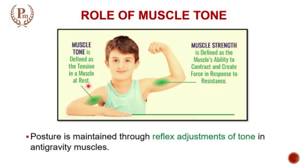How is this tone maintained? Tone is maintained because of the stretch reflex, and in a stretch reflex we have the role of the alpha motor neuron, we have the role of the gamma motor neuron, and we have a very important role of our muscle spindles.